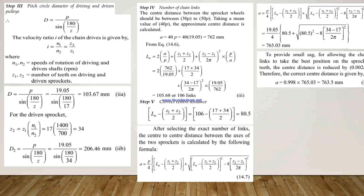Step 4 is the number of chain links. The center distance between the sprocket wheels should be 30p to 50p; taking the mean value of 40p, the approximate center distance A = 40p = 40 × 19.05 = 762 mm. The number of links is calculated using: Ln = (2A / P) + (Z1 + Z2) / 2 + [(Z2 − Z1) / 2π]² × (P / A). Substituting all values gives Ln = 106 links.